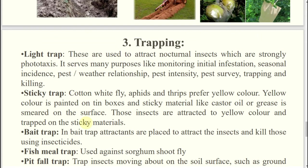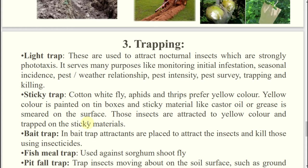What is a light trap? One light source will be there. Nocturnal insects that are positively phototactic will get attracted to the light trap. They will come towards the light; below the light, one baffle will be there through which they will enter inside, and at the bottom one trap will be given — some water or insecticide can be used — then they will be trapped and killed. This is your light trap.